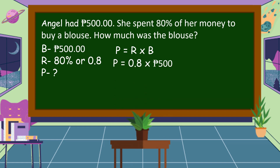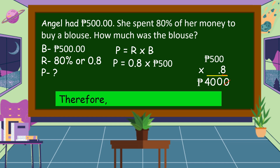Our rate is 8 tenths and our base is 500 pesos. So let's multiply: 500 pesos times 8 tenths. Because of the commutative property of multiplication, the order of the factors does not change the product — so 8 tenths times 500 is the same. 5 times 8 is equal to 40, then copy the two zeros. Since we multiplied by 8 tenths, we count one decimal number in our factors, so we cancel one zero in our product. Our answer is 400 pesos. Therefore, the blouse cost 400 pesos.